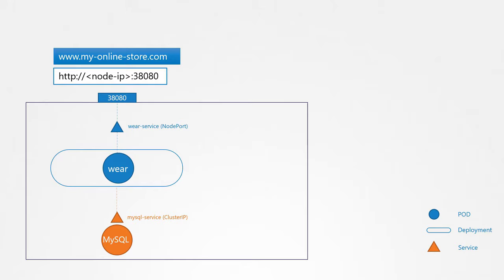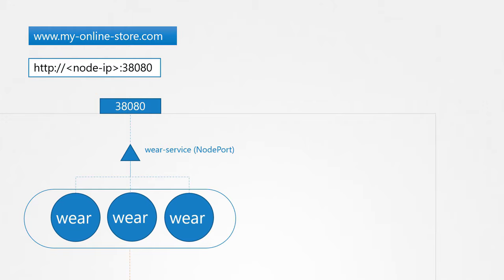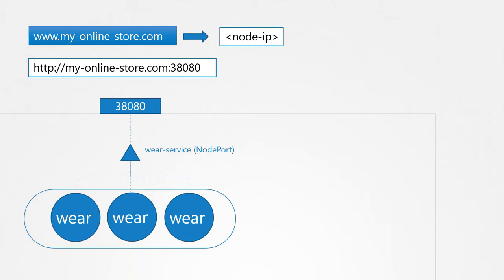Whenever traffic increases, we increase the number of replicas of the pod to handle the additional traffic, and the service takes care of splitting traffic between the pods. However, if you have deployed a production grade application before, you know there are many more things involved. For example, we do not want the users to have to type in the IP address every time. So you configure your DNS server to point to the IP of the nodes. Your users can now access your application using the URL my online store.com and port 38080.